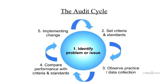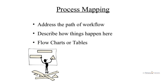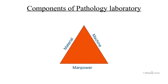The audit cycle begins by identifying an issue or problem in the laboratory or in the quality control process, then setting criteria and standards, then observing practice and collecting data, then comparing performance against the standard criteria, and then implementing change. This can be done via process mapping in the form of flow charts and tables.